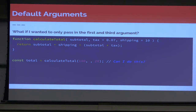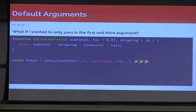But what if I only wanted to pass in the first and third arguments? Can I just skip the second? Nope — syntax error. What you want to pass in is undefined. If you pass in undefined for tax or shipping, it's going to know to set it to the default. And if you just leave off the last argument entirely, that's fine too — if you only passed in 100, the other two would default. But if a middle argument needs to be empty, passing undefined is exactly how to handle that.